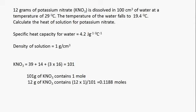In this example, we have 12 grams of potassium nitrate being dissolved in 100 cm³ of water, which is initially at 29 degrees Celsius. The temperature of the water falls to 19.4 degrees Celsius. The temperature falls, meaning the reaction mixture got cold — therefore energy was absorbed from the surroundings. We use the same assumptions: specific heat capacity of water is 4.2 J/g/°C and density of the solution is 1 g/cm³.